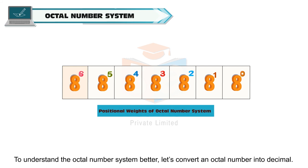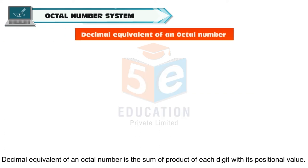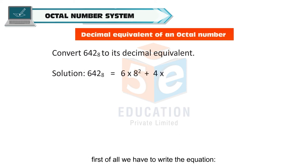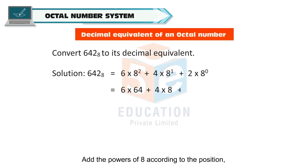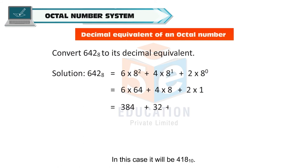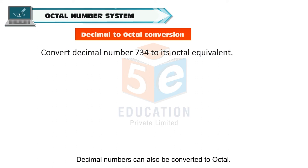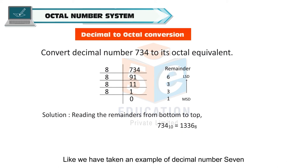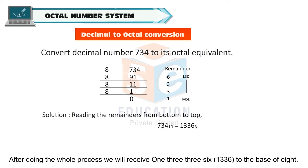To understand the octal number system better, let us convert an octal number into decimal. The decimal equivalent of an octal number is the sum of the product of each digit with its positional value. To convert 642 base 8 to its decimal equivalent, we write the equation, add the powers of 8 according to the position, and calculate the final answer. In this case, it will be 418 base 10. Decimal numbers can also be converted to octal by repeated division of the number by 8 while recording the remainder. For example, converting decimal number 734 gives us 1336 base 8.